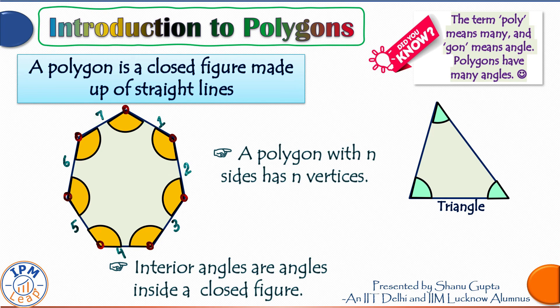The green ones are the interior angles of this triangle. The next thing to know is how to calculate the sum of these interior angles, and it would be best to take the triangle as a starting point. We have learned in our maths classes that the sum of interior angles of a triangle is always 180 degrees.